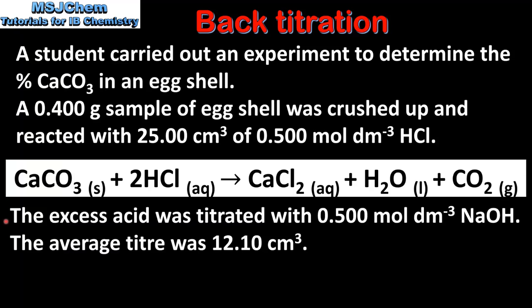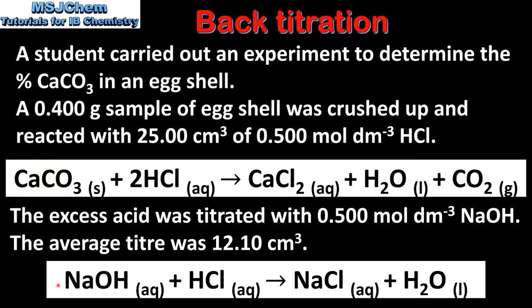Next, the excess acid was titrated with 0.5 mol per dm³ sodium hydroxide. The average titer was 12.10 cm³. The reaction between sodium hydroxide and hydrochloric acid produces sodium chloride and water.